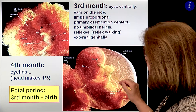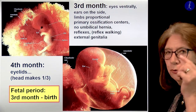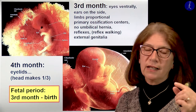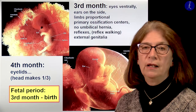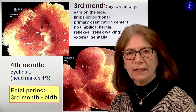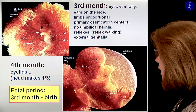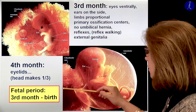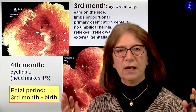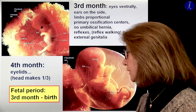In the fourth month, the eyelids will develop and grow together, similarly to kittens. In humans they open up between the 22nd and 24th week of gestation. And this period, from the third month on, we call it already the fetal period. For the first two months that's the embryonic period, and from the third month on you may call it already a fetus.